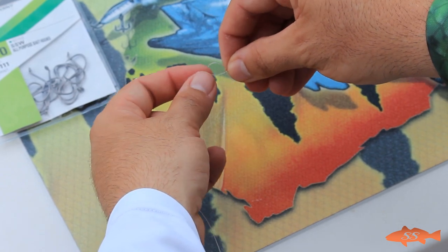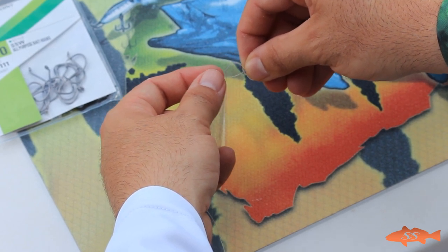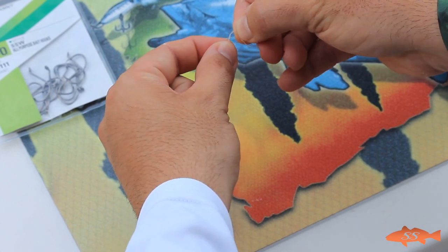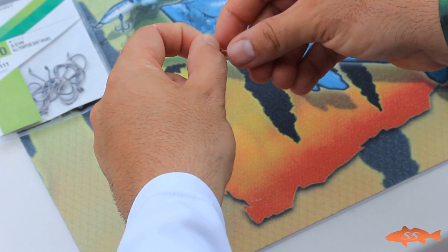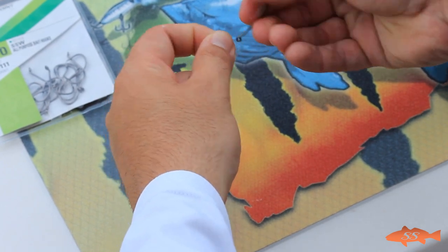Now at this point, you could finish the knot just by using a little saliva and pulling it, cinching it tight. Or you could do what I like to do and wrap it back around through that loop that you just made. Then cinch it tight. That just gives it a little extra strength.